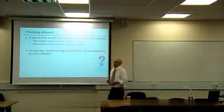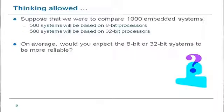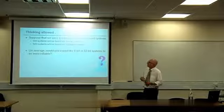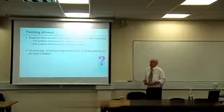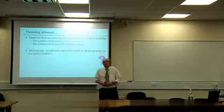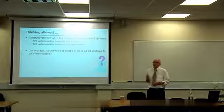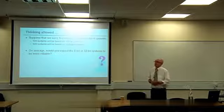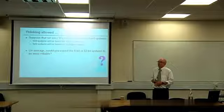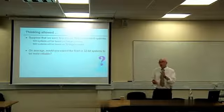Let's start with a question. Suppose you were to compare 1,000 embedded systems — 500 based on 8-bit devices, 500 based on 32-bit devices. Given that vague spec, which would you expect to be more reliable? One factor is JTAG — with that extra feedback it might make the system more reliable. And one of the big differences is some of the things we talked about yesterday, like transmitting data over an RS-232 link.